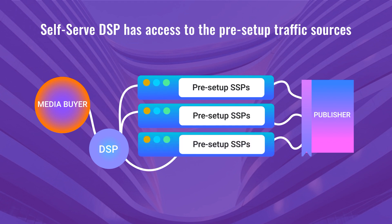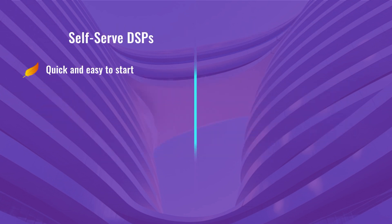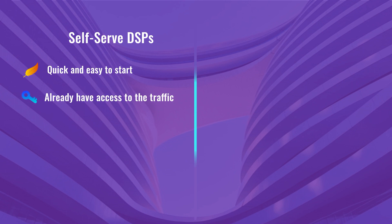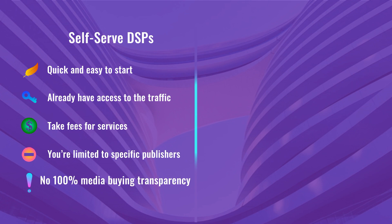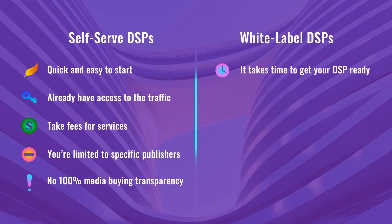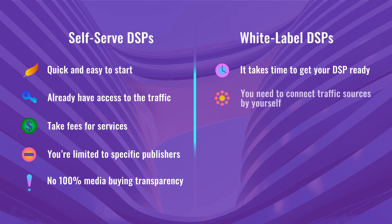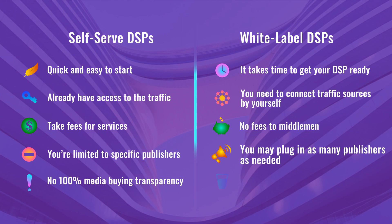To sum it up, here are the main differences between a self-serve DSP and a white-label DSP. Self-serve DSPs get your ad campaigns started quickly and already have access to traffic, but you're limited to those traffic sources linked to specific DSPs. They also take fees for their services and don't guarantee 100% transparency. With a white-label DSP, setup takes more time and you must connect publishers yourself, but the biggest advantage is that you stop paying fees to middlemen and your media buying activities always stay fully transparent.